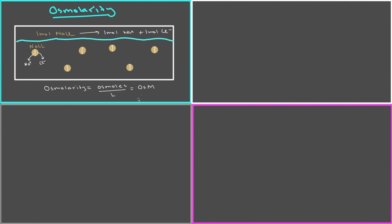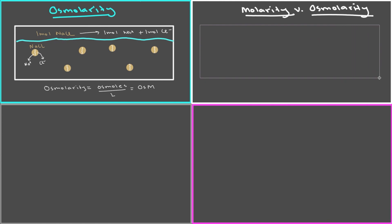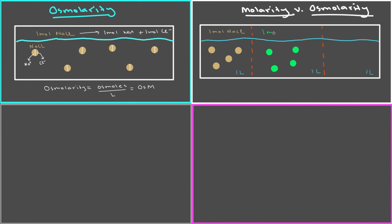To really highlight the difference between osmolarity and molarity, let's compare them by calculating both for a variety of different solutions. I'm going to draw three different solutions using a tank divided by barriers. In each compartment there is one liter of water. The first solution has one mole of sodium chloride, the second has one mole of glucose — same amount but a different type of solute.